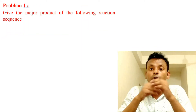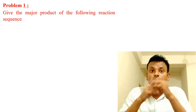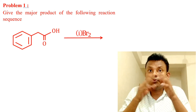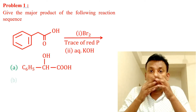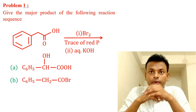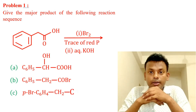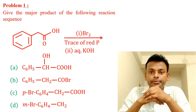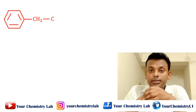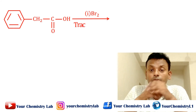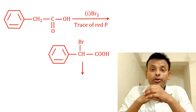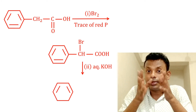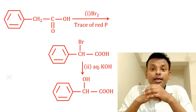Question 1: This compound reacts with Br2 in the presence of red phosphorus, and second step is aqueous KOH. Options A, B, C, and D are given. The correct answer is option A. This compound first reacts with red phosphorus and Br2 — this is the HVZ reaction — and the second step reacts with aqueous KOH to give that product. So option A is the correct answer.